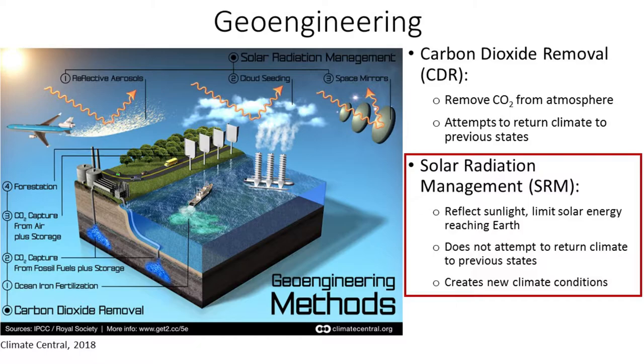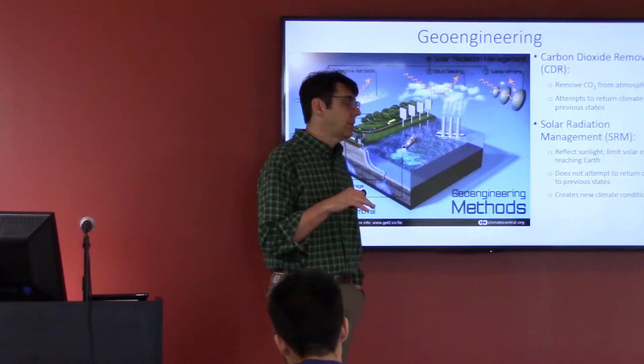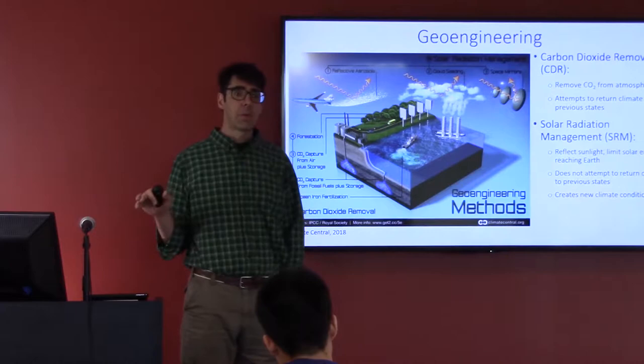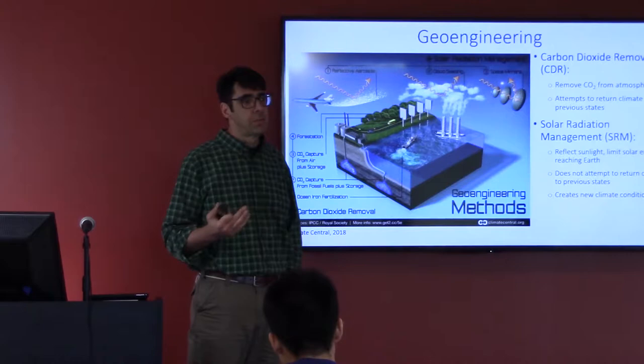The other option is solar radiation management, or SRM. This is reflecting or limiting the incoming sunlight in a way that offsets the warming expected from greenhouse gases. It's not an attempt to return the earth to its previous climate states — it's creating new climate conditions seen as favorable relative to those we might face under climate change. It doesn't reverse climate change; it offsets it, which has some other effects.